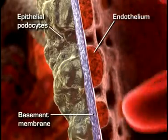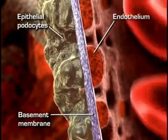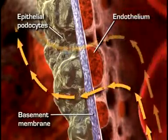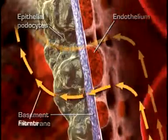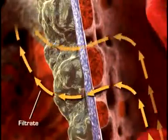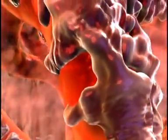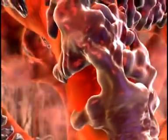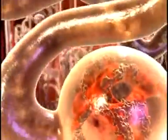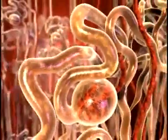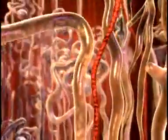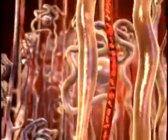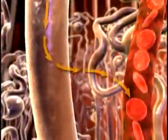This membrane allows some particles from the blood to pass through, but not all. The fluid that is filtered from the capillary blood into Bowman's space is called filtrate and forms the primary urine. The filtrate then diffuses across Bowman's space and into the tubule system of the nephron. In the tubules, some substances are added to the filtrate as part of urine formation, and some substances are reabsorbed out of the filtrate and back into the blood.